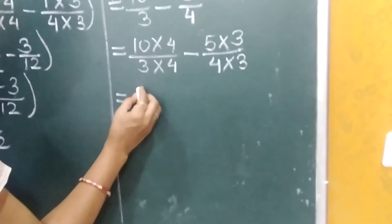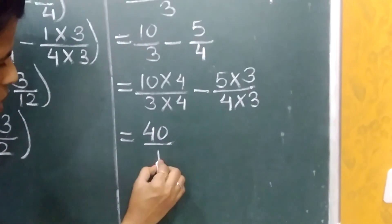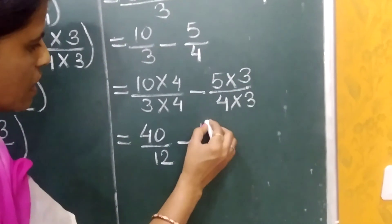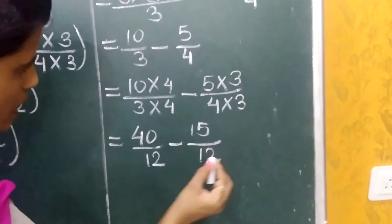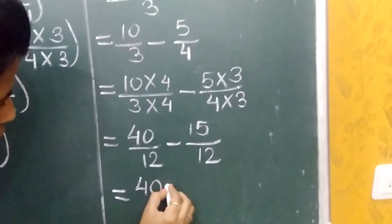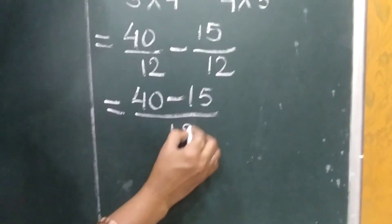To make the denominator same. So what we get? 10 fours are 40, 3 fours are 12, minus 5 threes are 15, 4 threes are 12.